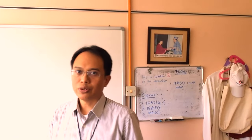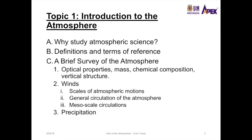We're going to cover three main topics. The first is why study atmospheric science. The second is the definitions and terms of reference in atmospheric science. The third is a brief survey of the atmosphere, which includes subtopics: optical properties, mass, chemical composition, vertical structure of the atmosphere, wind patterns in the atmosphere, and precipitation that occurs in the atmosphere.